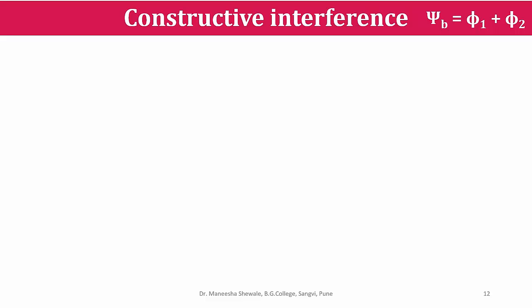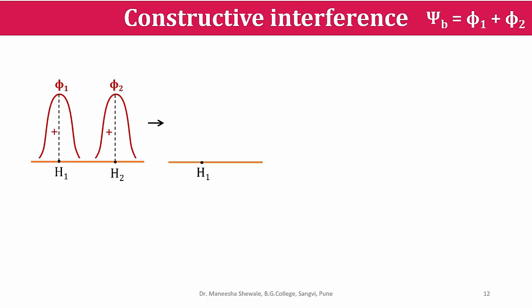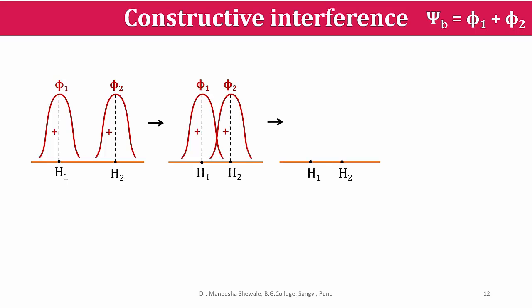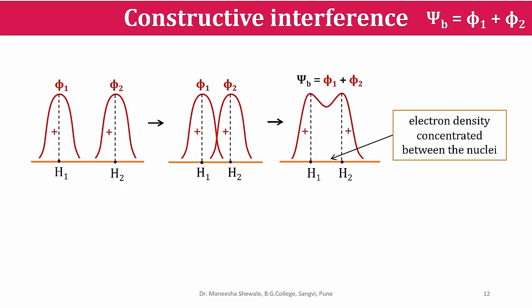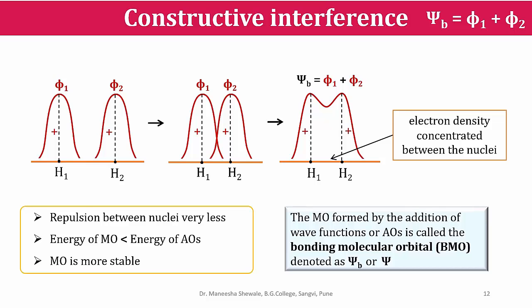In constructive interference, the two wave functions phi1 and phi2 come together and the resulting wave function is of greater magnitude — psi = phi1 + phi2. The electron density between the two hydrogen atoms is more concentrated in the molecular orbital, and due to this concentration of electron density the repulsion between the nuclei is less. The molecular orbital formed has an energy lower than that of the atomic orbitals and is therefore more stable. Such a molecular orbital formed by the addition of wave functions is called the bonding molecular orbital, denoted as psiB or psi.